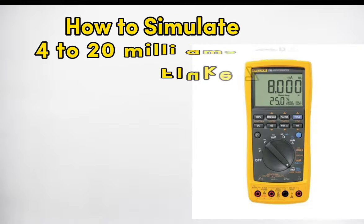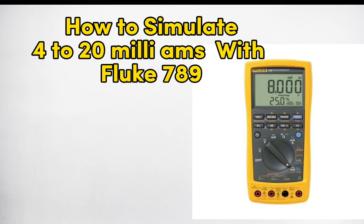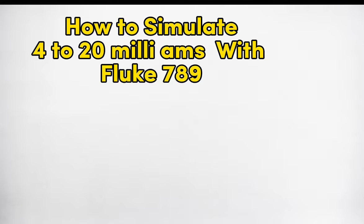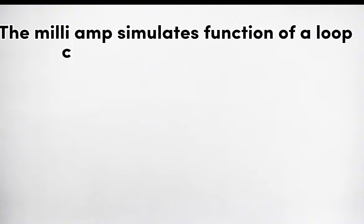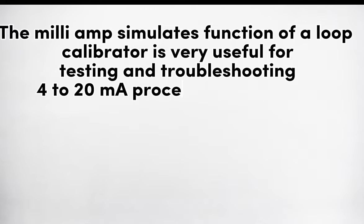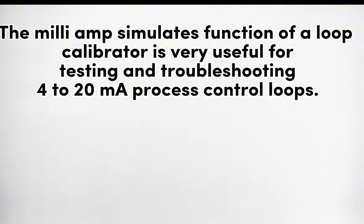How to simulate 4 to 20 milliamps with the Fluke 789. The milliamp simulate function of a loop calibrator is very useful for testing and troubleshooting 4 to 20 milliamp process control loops.